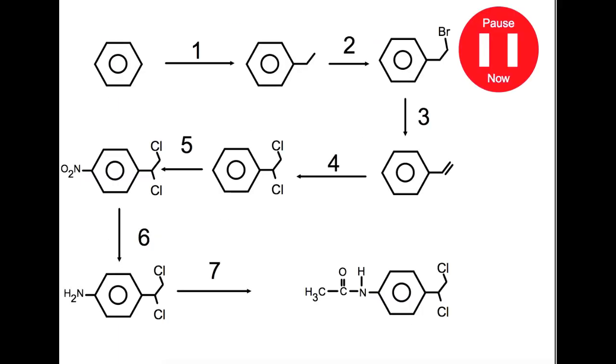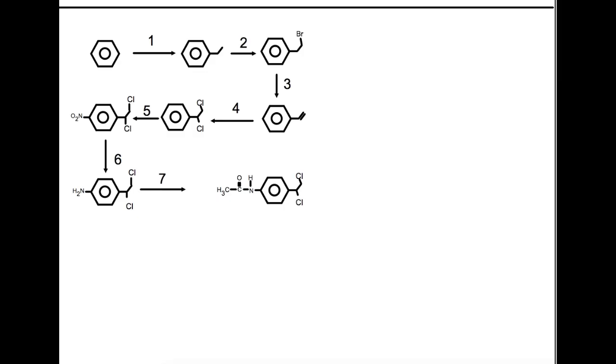This final reaction looks quite complicated. But all I want you to do for this one is to name the type of reaction and the reagents involved in each step. So let's have a look at these different steps. So for step one you have an electrophilic substitution. And this one is specifically an alkylation reaction. So you're adding on this group here. So the reagent that you need will be C2H5Cl with an aluminium chloride catalyst.